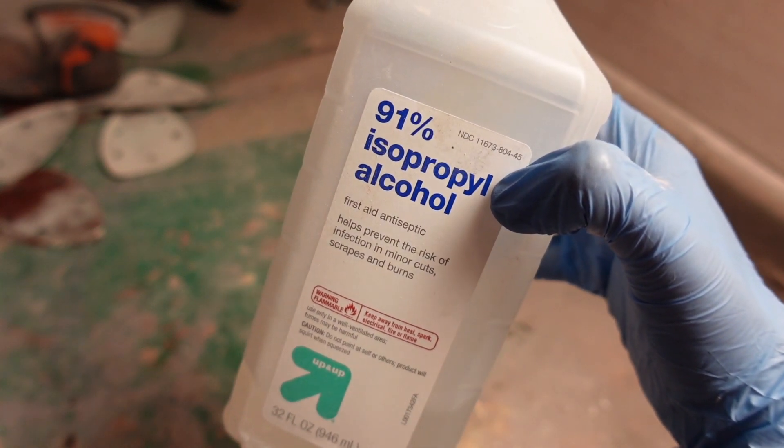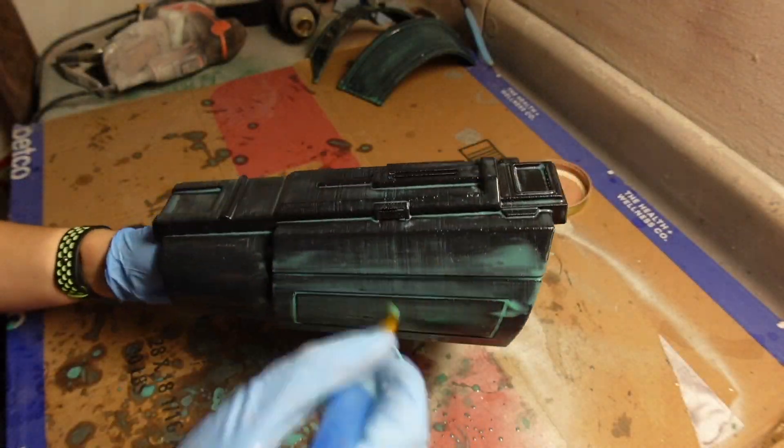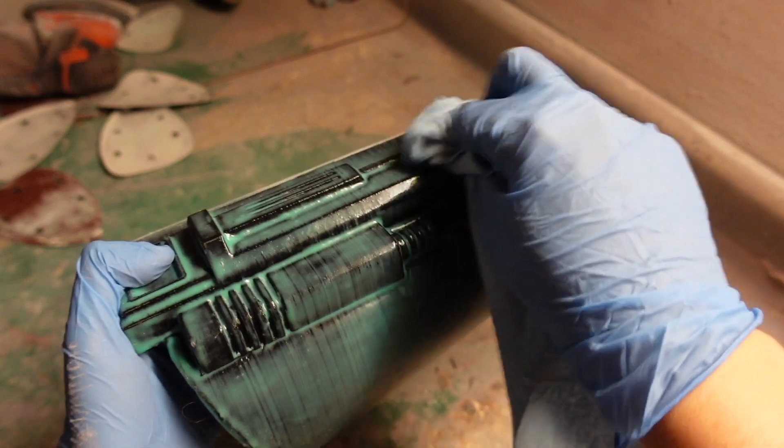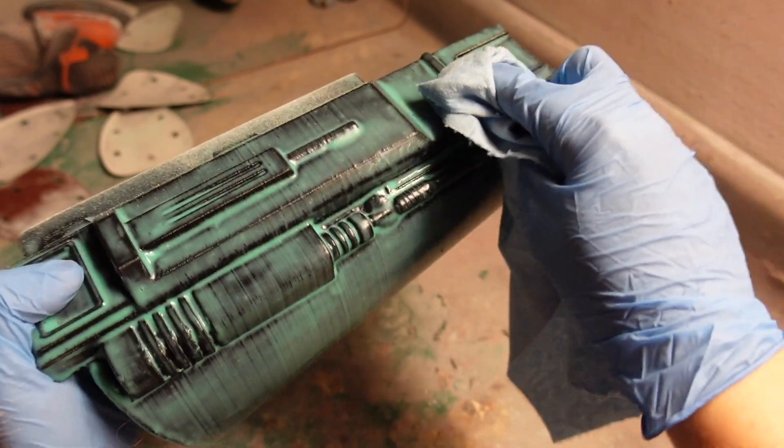After they were done curing I wiped them down with some 91% isopropyl alcohol to clean up any uncured resin and went back in with another layer of UV resin. I then let that cure for another 15 minutes before wiping it down again with some 91% isopropyl alcohol. Then we're finally getting into the fun part of sanding.